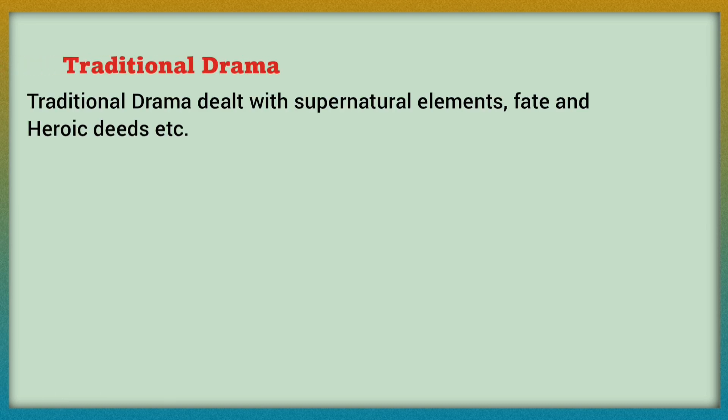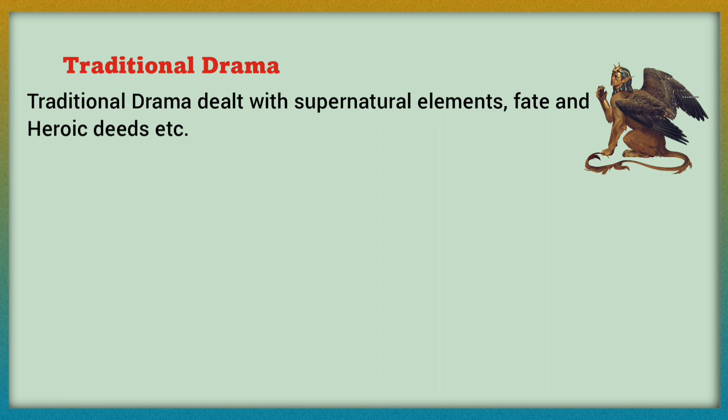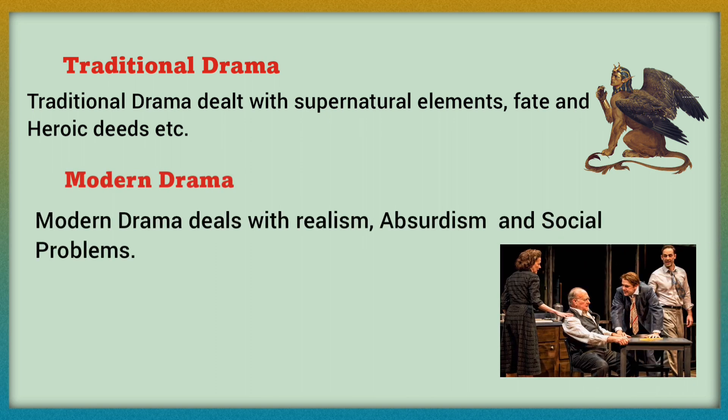Traditional dramas deal with supernatural elements, fate, heroic deeds, etc. On the other hand, modern drama deals with realism, absurdism, and social problems, and is therefore also known as problem drama. Modern drama in English literature is marked by several important characteristics that distinguish it from earlier forms of drama, reflecting the changing social, cultural, and political landscape of the modern world.